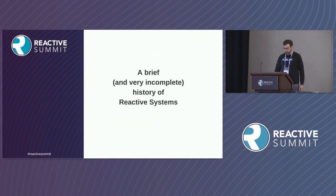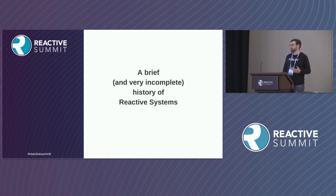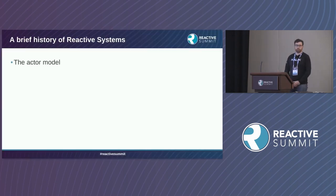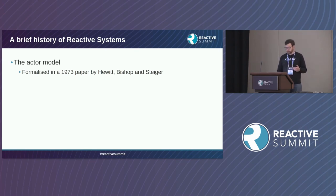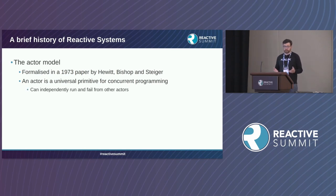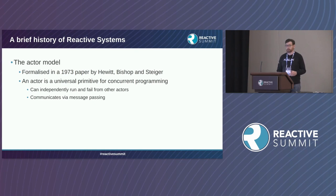To start off, we're going to go back in time and look at a brief and very incomplete history of reactive systems, because I think it's important to understand that none of this stuff is actually new. We'll start off with the Actor model, which was formalized in 1973 in a paper by Carl Hewitt. The idea is that you have an actor as a universal primitive for concurrent programming. Actors can run independently and fail independently, communicating via message passing.